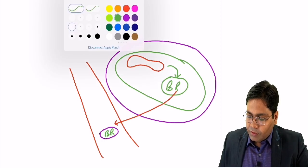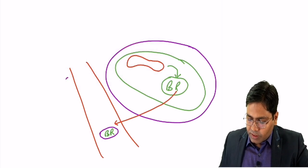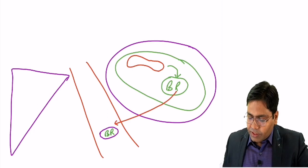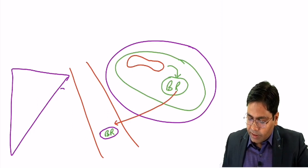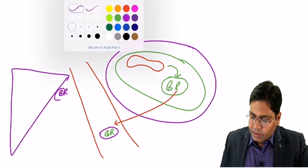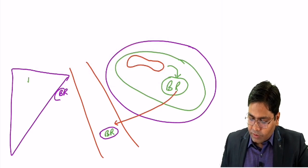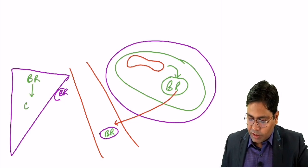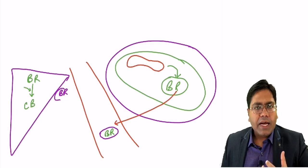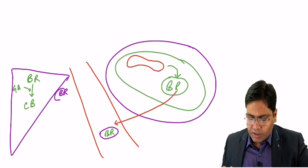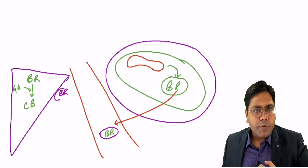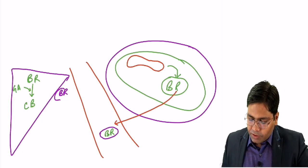This bilirubin bound with the protein reaches to the liver. When this bilirubin reaches the hepatocyte, it will be taken up by the hepatocyte. Inside the hepatocyte, bilirubin will be conjugated to form conjugated bilirubin by adding glucuronic acid. This conjugated bilirubin is the water soluble form of bilirubin.